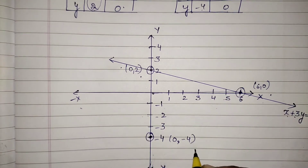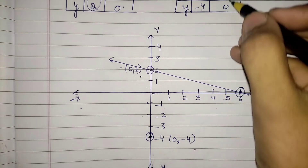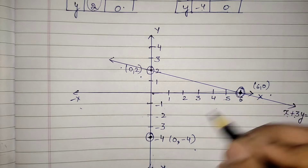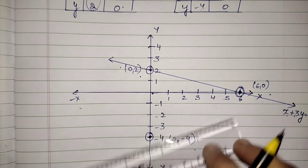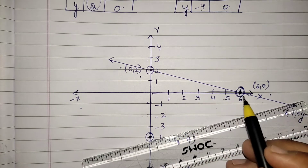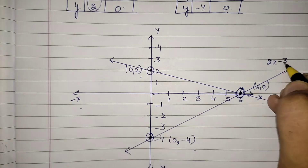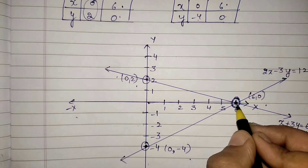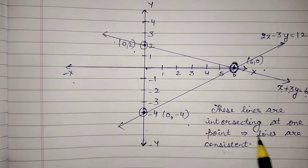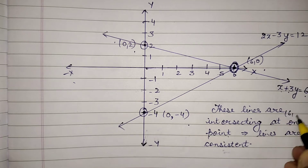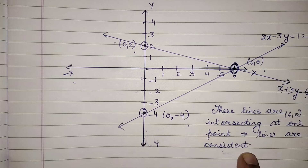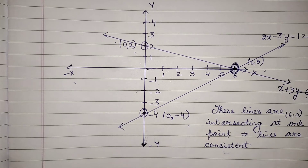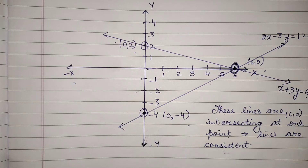The points for the second equation are (0, −4) on the negative y-axis, and (6, 0). Join these two points to get the line 2x − 3y = 12. You can see that these two lines intersect at one common point, which is (6, 0). So the lines are consistent with each other. This is how you solve all questions in exercise 3.2 graphically.